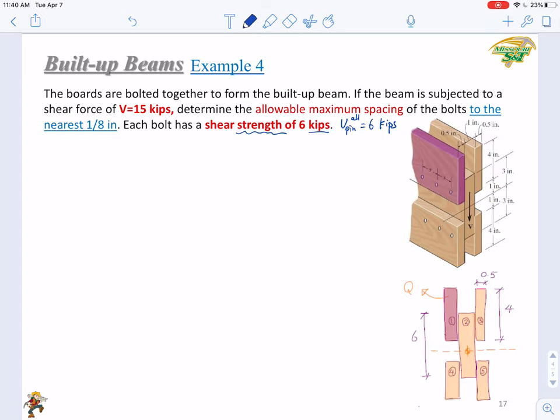As usual, we just start from the first step. We determine the V_max or the V value, this is a constant. It has been given as 15 kips.